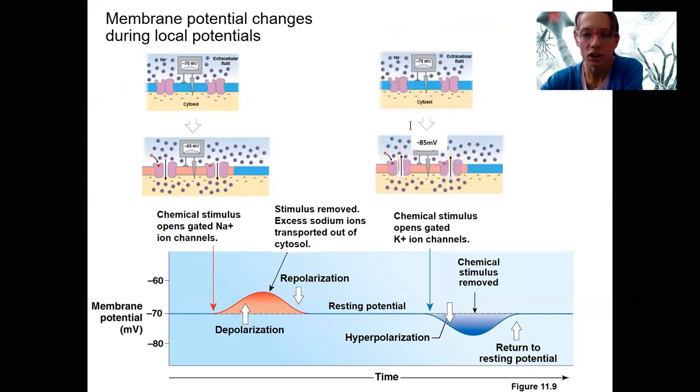In this scenario here, we've also got ion channels that were present. This ligand-gated ion channel is a potassium channel. When potassium channels open, potassium is going to flow out. So this is making the cell more negative.